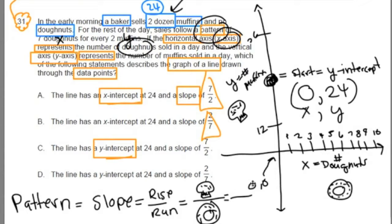When we're thinking about rise over run, it's the change in the y's over the change in the x's. So in this case, if we just match it up with muffins to doughnuts, well, two muffins go on the top, seven doughnuts go on the bottom. And guess what, team?